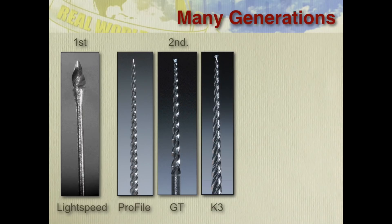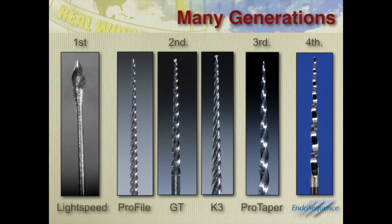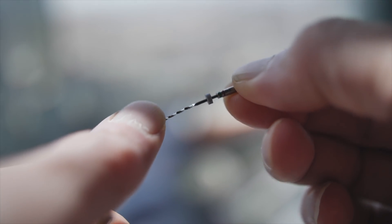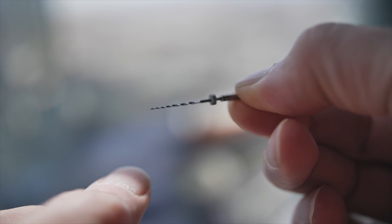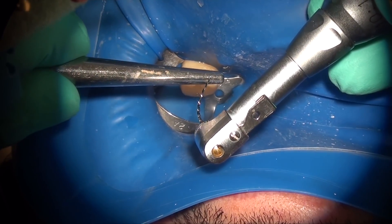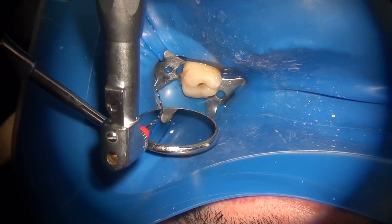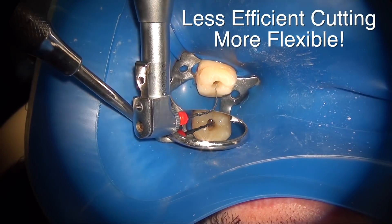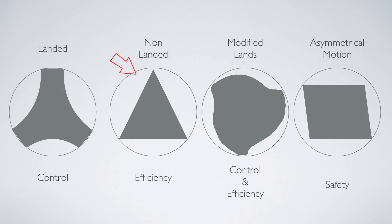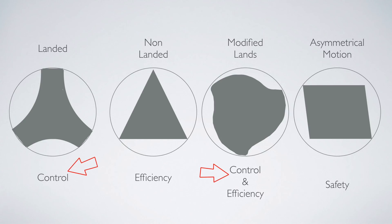Over the past 25 years of rotary instrumentation, we've learned that non-heat treated files are more efficient in cutting because they have more edge fidelity and sharper edges, but they are stiffer. Heat treated files are more ductile and therefore less efficient — the edge can roll over — but they are more flexible. We also know that files with a triangular cross-section cut better, while landed files provide more control and center better in the root canal even though they cut less efficiently.